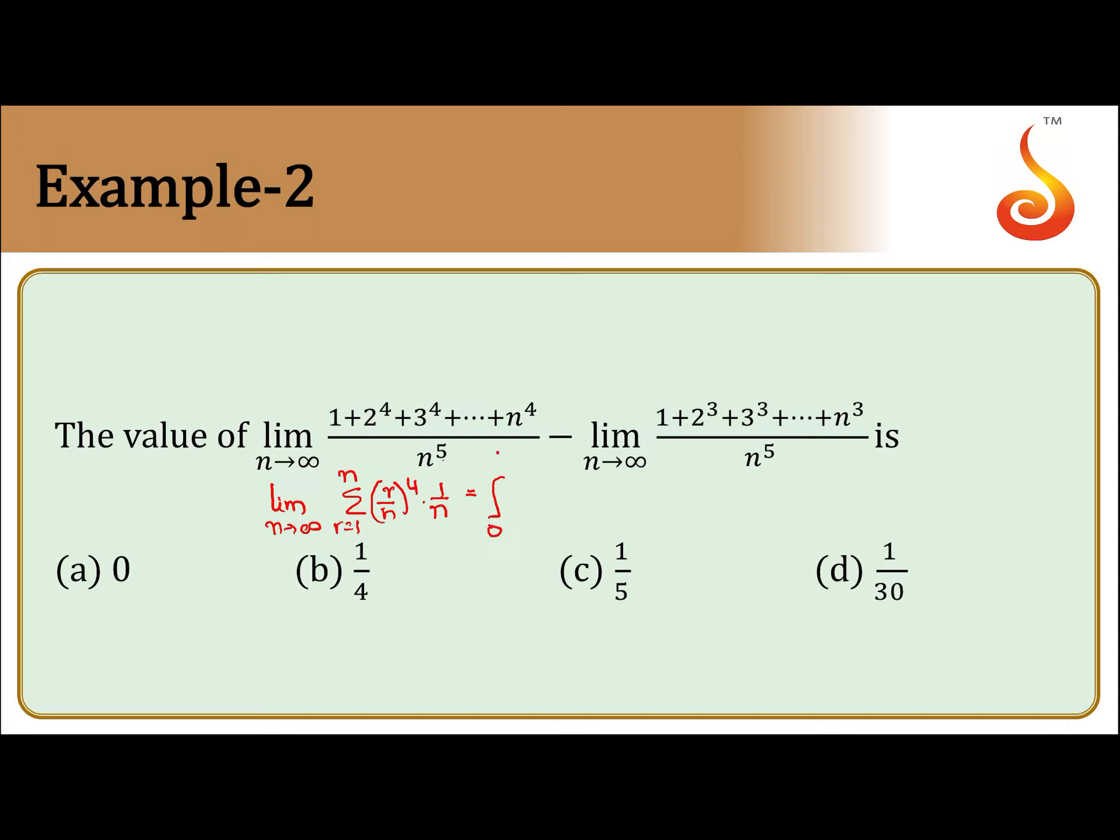What happens? This one is integration 0 to 1, x to the power 4 dx, minus if we see this one, limit n tending to infinity. The degree of numerator is n cube. Summation of n cube is nothing but n into n plus 1 by 2 whole square into 1 by n to the power 5.